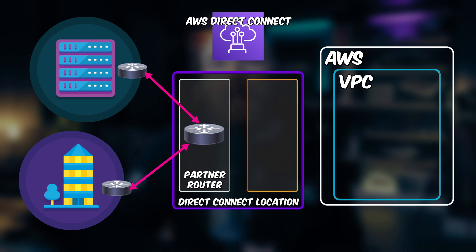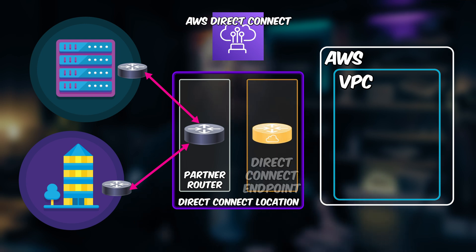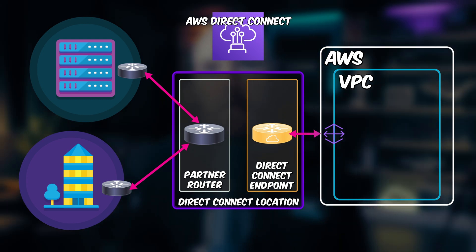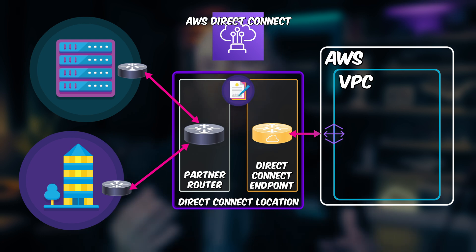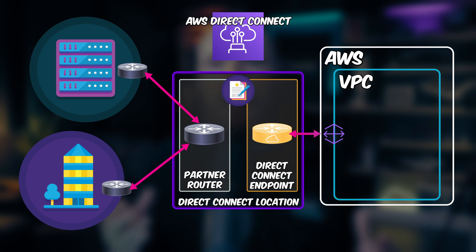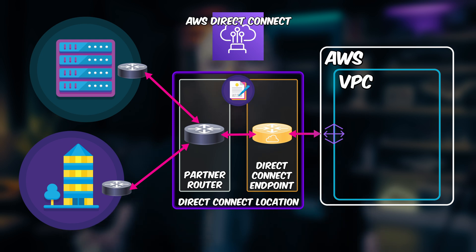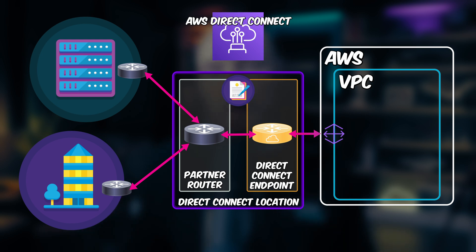Within the Direct Connect location, AWS also has networking equipment that connects into the AWS backbone network. Our Direct Connect partner would then use this authorization letter and their special security clearances to access the secured AWS networking equipment and establish a cross-connect between their routing equipment and AWS. This effectively gives you that private network connection into the AWS backbone network.